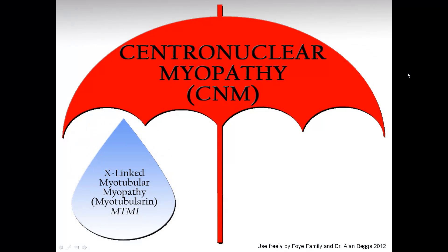The first of these subtypes, going in order of when they were first discovered, is X-linked myotubular myopathy, sometimes abbreviated as MTM or XLMTM. This is caused by a problem with the MTM1 gene, which in turn causes a problem with the protein myotubularin.